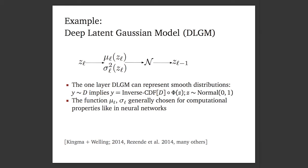Why would we want to do this? The one-layer version of this model can represent a huge class of smooth distributions — you can see this because if you have Y coming from some distribution D, you can use inverse CDF sampling to get something by transforming the draw from the normal. Additionally, the functions mu_L and sigma_L can be chosen for computational properties similar to those you'd want in neural networks, like efficient gradient propagation.